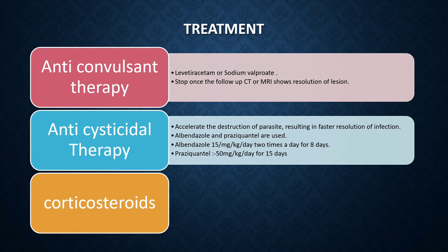The dose of albendazole is 15 mg per kg per day, given twice a day for 8 days. The dose of praziquantel is 15 mg per kg per day for 15 days.